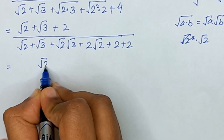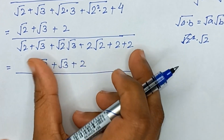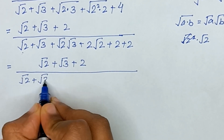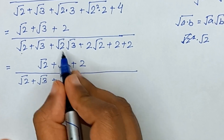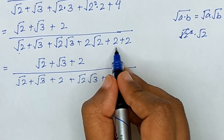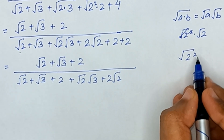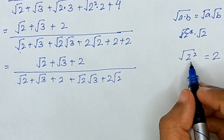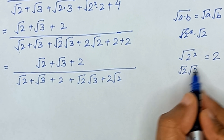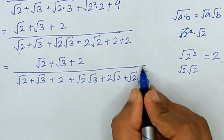Now we have square root of 2 plus square root of 3 plus 2, divided by square root of 2 plus square root of 3. This gives us 2 plus square root of 2 times square root of 3 plus 2 square root of 2. This 2 can be written as 2 squared with its square root, and since square root of 2 times square root of 2 equals 2, we replace 2 with square root of 2 times square root of 2.